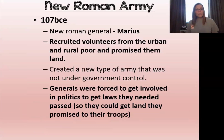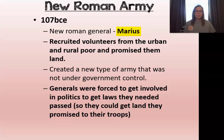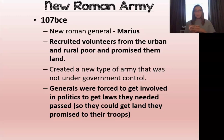In 107 BCE, a new Roman army was established because of a new Roman general named Marius. Marius recruited volunteers from the urban and rural poor and promised to give them land. What happens is that now the soldiers of the army were not loyal to the government — they were loyal to Marius, their general. The generals had to get involved in politics in order to get things they needed for their army. Marius, starting as a military leader, became involved in politics because he had promised land to his soldiers and had to keep that promise or lose their loyalty.